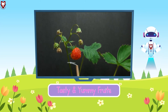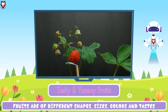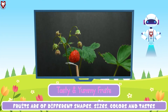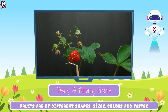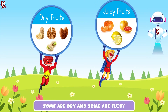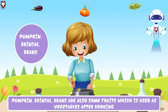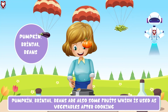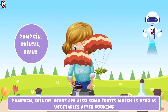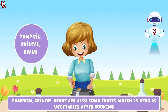Some flowers develop into fruits — tasty and yummy fruits. Fruits are of different shapes, sizes, colors and tastes. Some are dry and some are juicy. Pumpkin, brinjal, beans are also some fruits which are used as vegetables after cooking.